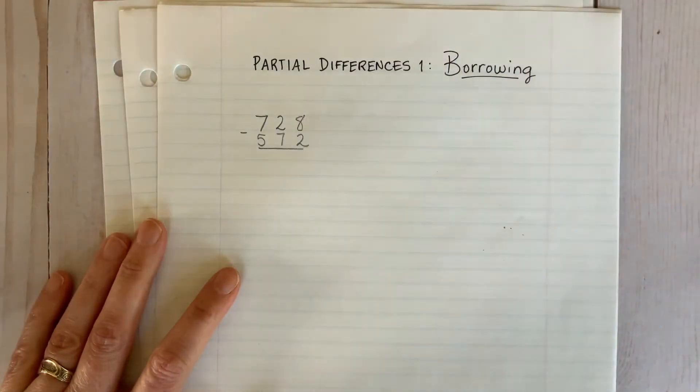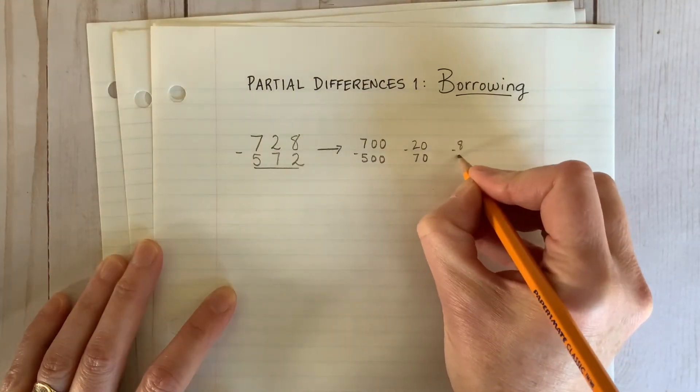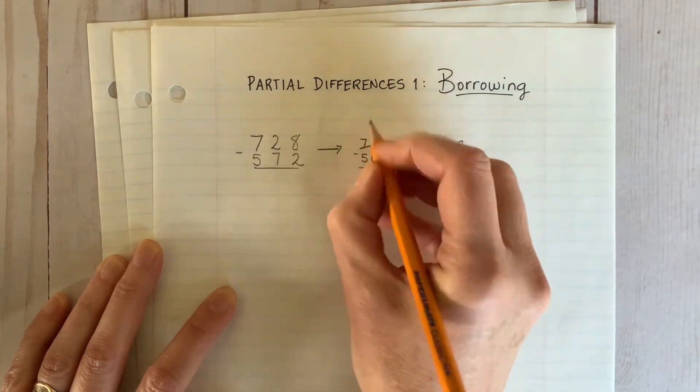The borrowing version requires that students get used to expanding numbers, lining up place value parts, and borrowing if there's not enough on top.